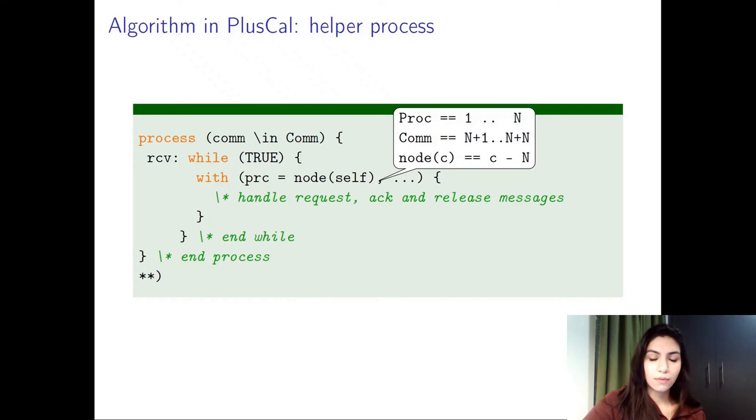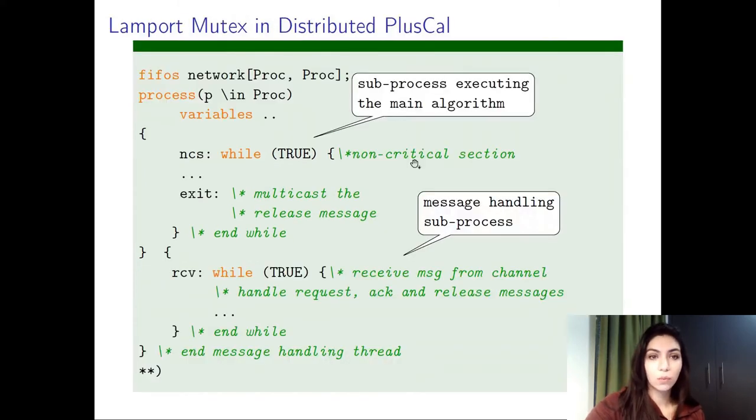However, if we model this algorithm in distributed PlusCal, it can be done in a simpler way. We will have only one process type where you have two subprocesses working together to carry out this algorithm. The first subprocess starts with this curly brace here and ends with this curly brace here. The first subprocess carries out the same logic we discussed before - you have a non-critical section all the way to releasing the critical section. And the second subprocess handles the asynchronous message reception.